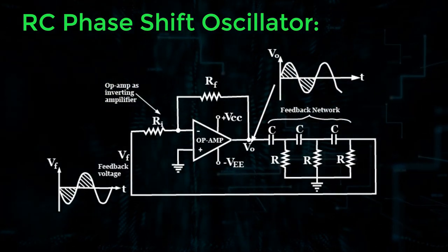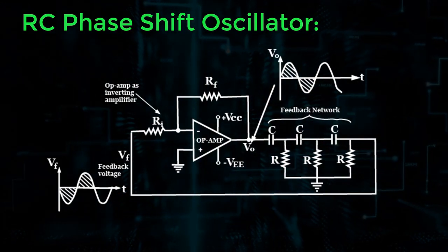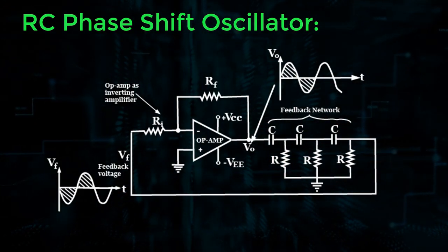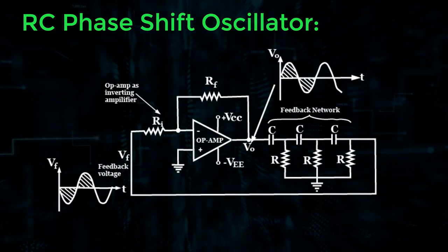The feedback network shifts the phase of the amplifier output by 180 degrees at the oscillation frequency to give positive feedback.